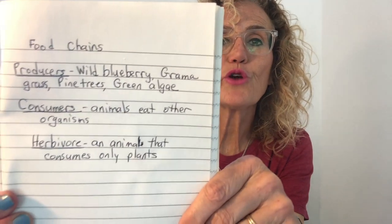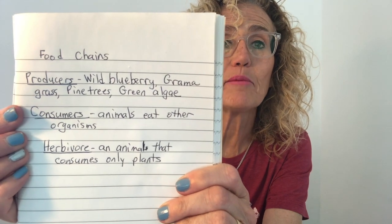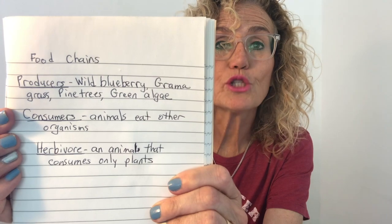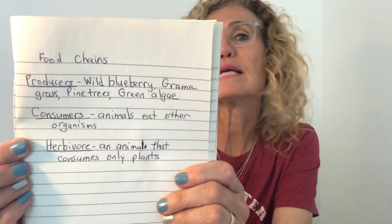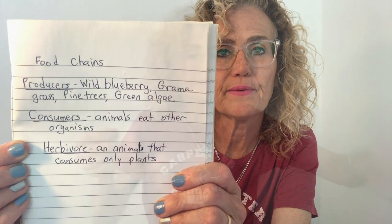How do animals get food? Animals eat other organisms — we are consumers, we are consuming or eating something else. Some animals only eat plants. Look through your cards — which organisms only eat plants? I noticed that the snowshoe hare, the chipmunk, and the grouse were the animals that only ate plants. In your notebook, please write: consumers are animals that eat other organisms. Some of those consumers are herbivores, and a herbivore is an animal that consumes only plants.